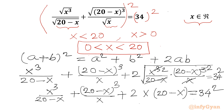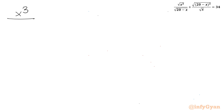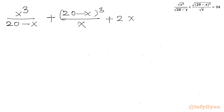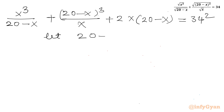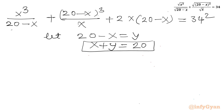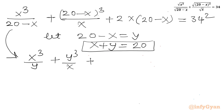Now I will use substitution. Let y equal 20 minus x, so x plus y equals 20. Applying this, the equation becomes: x cubed over y plus y cubed over x plus 2xy equals 34 squared.